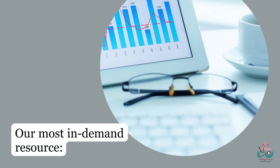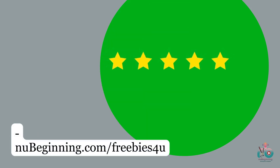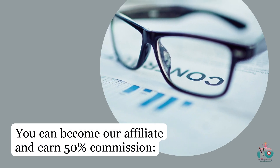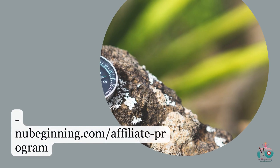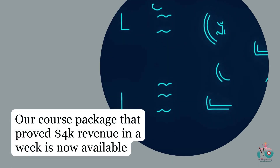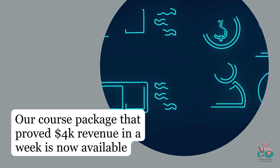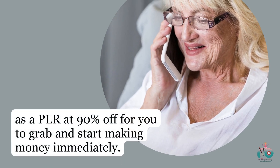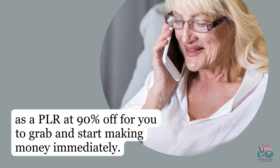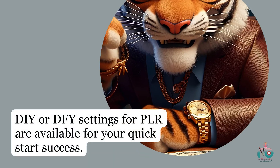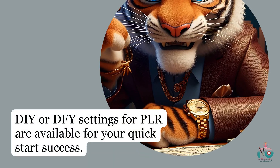Our most in-demand resource is available at newbeginning.com/freebies. You can also become our affiliate and earn 50% commission at newbeginning.com/affiliateprogram. Our course package that proved $4,000 revenue in a week is now available as a PLR at 90% off — grab it and start making money immediately. DIY or DFY settings for PLR are available for your quick start success.